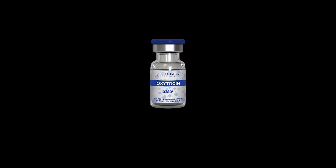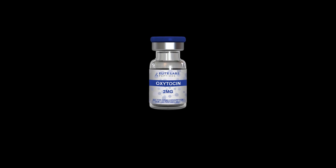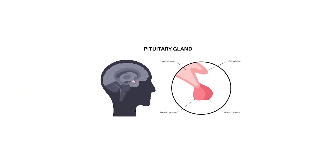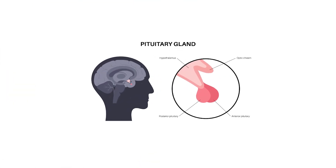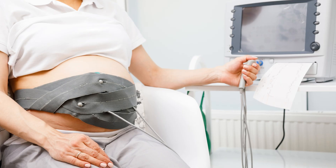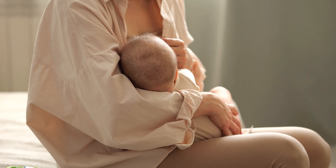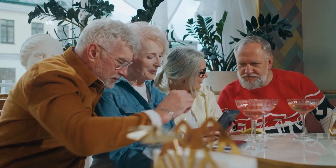Oxytocin is a naturally occurring hormone and neuropeptide produced in the hypothalamus and stored in the posterior pituitary gland. It is best known for its role in labor and lactation, where it stimulates uterine contractions and milk ejection. Beyond reproductive health, oxytocin has significant effects on social bonding, emotional regulation, and stress management.